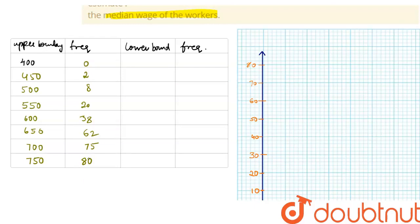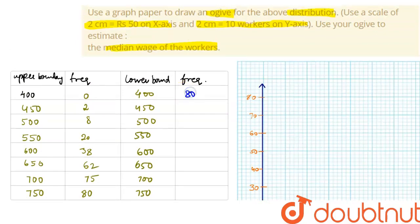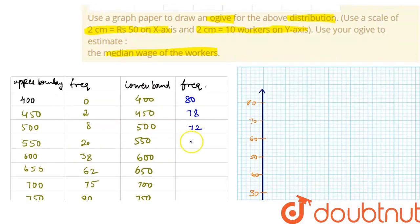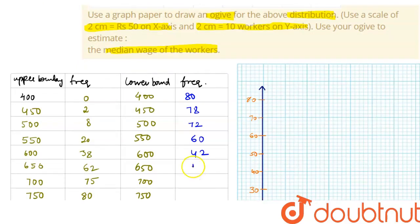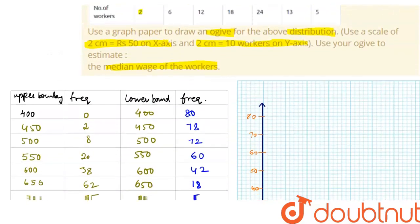For the lower boundary, starting from 400, 450, 500, 550, 600, 650, 700, and 750: at 400 the cumulative frequency is 80. Then 80 minus 2 is 78, minus 6 is 72, minus 12 is 60, minus 18 is 42, minus 24 is 18, minus 13 is 5, and finally 0. Our table is now ready.